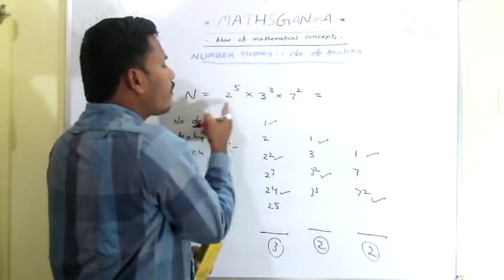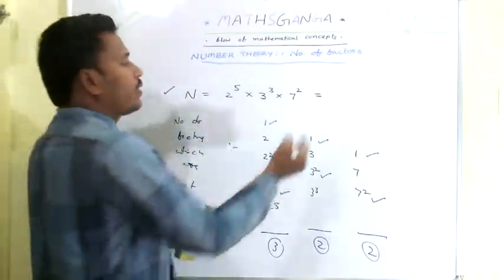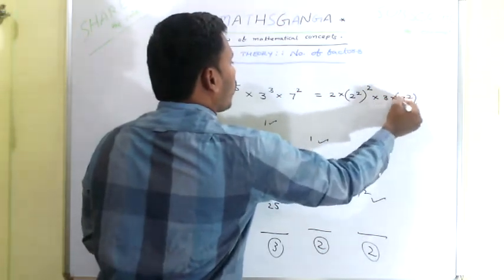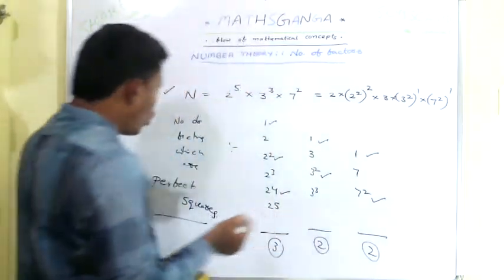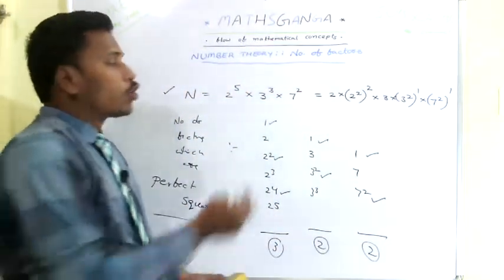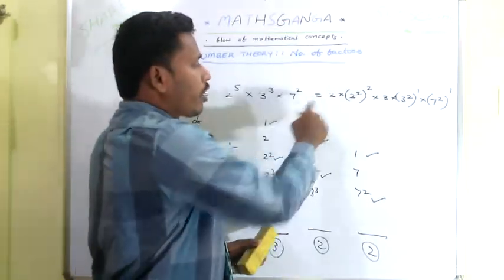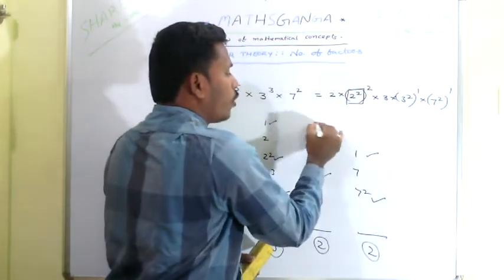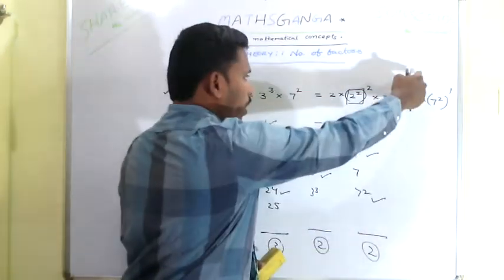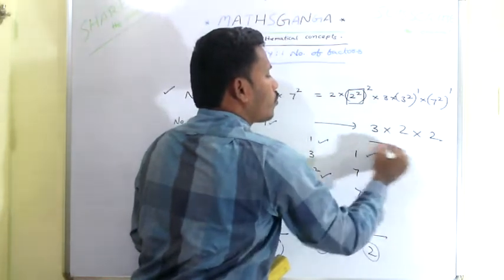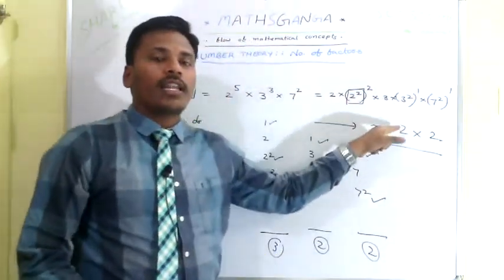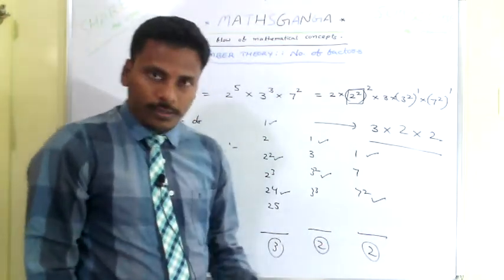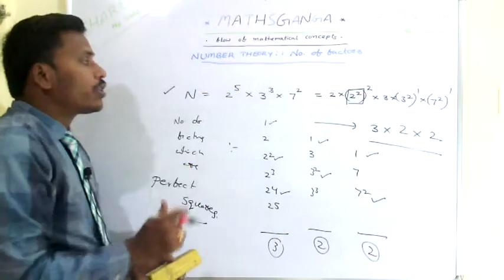The direct way: express 2^5 × 3^3 × 7^2 as (2^2)^2 × 2 × (3^2)^1 × 3 × (7^2)^1. Since we count perfect square factors, concentrate on the perfect-square bases: (2^2)^2 gives power 2, so 2+1=3; (3^2)^1 gives power 1, so 1+1=2; (7^2)^1 gives power 1, so 1+1=2. Product = 3 × 2 × 2 = 12. There are totally 12 factors which are perfect squares.